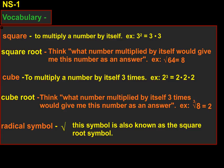Square root: you can think of this as sort of the opposite of squaring. Think to yourself, what number multiplied by itself would give me this number as an answer? For example, the square root of 64 is 8, because 8 times 8 equals 64.